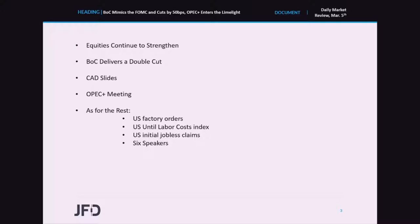Today I will talk about the continuation of the equity rebound, the Bank of Canada meeting we had yesterday where the bank decided a 50 basis points cut as the FOMC did on Tuesday, and why the Canadian dollar slid on the decision. Then I will talk about the OPEC and major non-OPEC producers meeting in Vienna, which starts today and ends tomorrow. We also have US factory orders for January, the US unit labor costs index for Q4 2019, US initial jobless claims, and six speakers on the agenda for today and tonight.